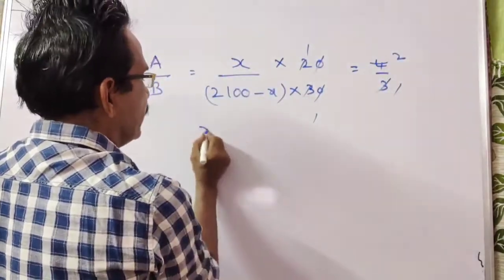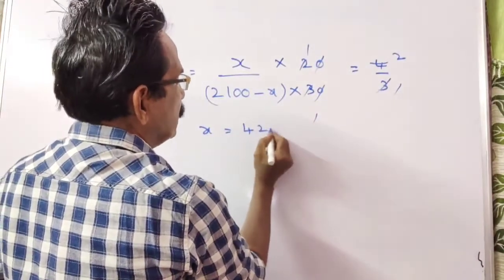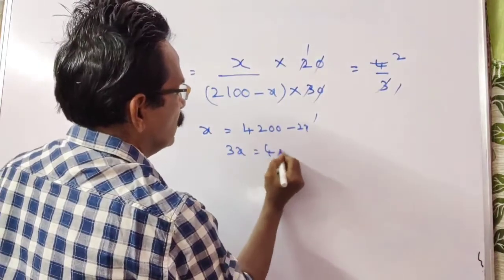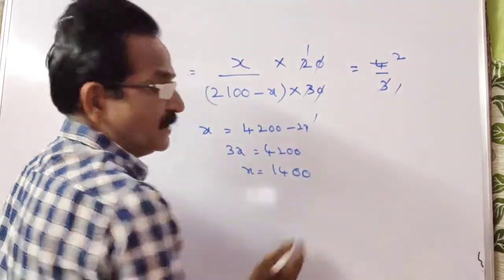So X into 1. X is equal to 2 into 2100, 4200 minus 2X. 3X is equal to 4200. X is equal to 314. X is equal to 1400.